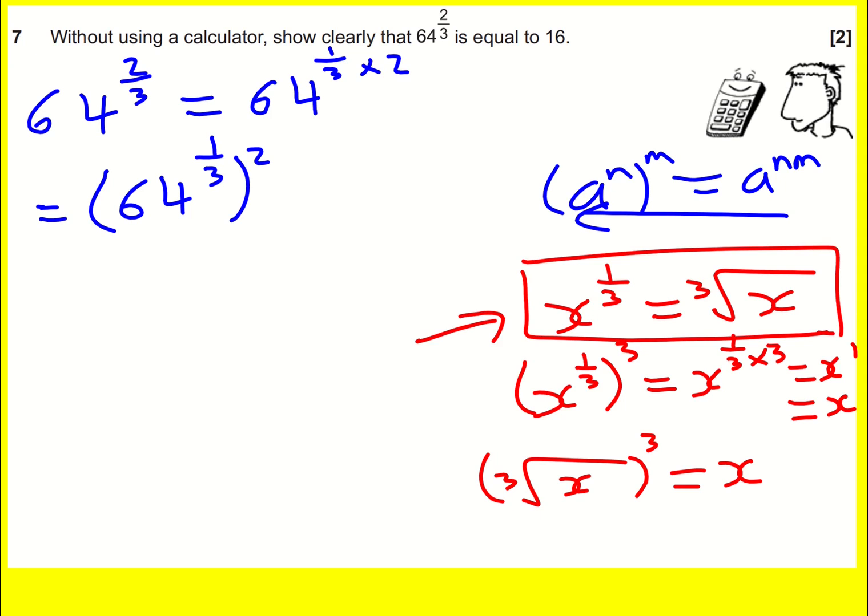You have to know that for this question, really. You don't have to do the proof, but essentially the aim is to learn that x to the 1 over n is actually the nth root of x. So if it's a half, it's the square root; if it's a quarter, it's the fourth root.